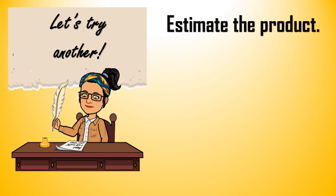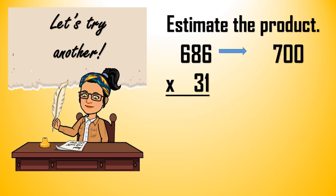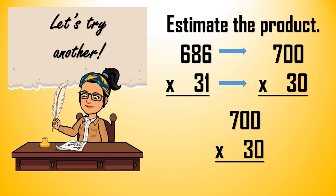Let's estimate the product of 686 and 31. 686 times 31. First we round off the factors. So 686 will become 700, yes that's right. And 31 will become, very good, 31 will become 30. So we now have 700 times 30.